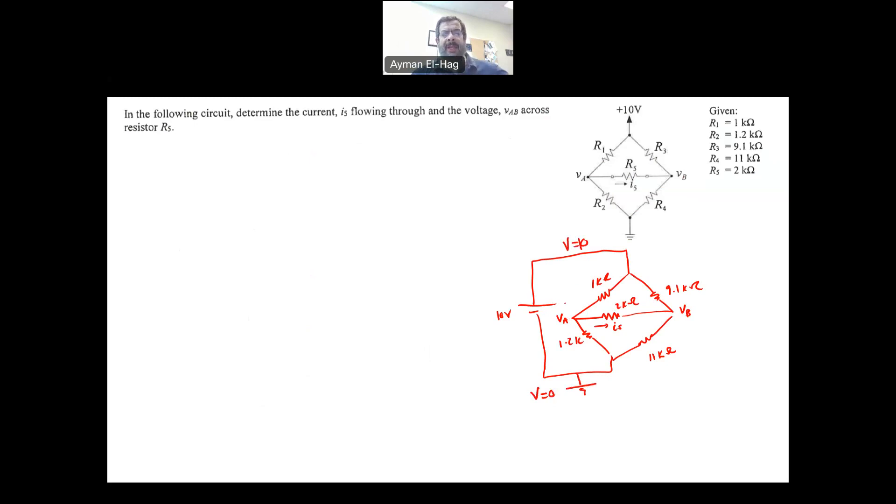So we will apply KCL at VA. We will assume the currents are leaving. So we represent the currents in terms of the node voltages. I will not consider I5 now. I will just have the equations in terms of VA and VB. So I assume all the currents are leaving the node. So we will have (VA - 10)/1kΩ, which is this current, plus (VA - VB)/2kΩ, which is this current, and finally the third current, which is (VA - 0)/1.2kΩ, equal to zero.